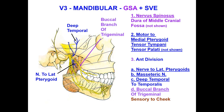The anterior division has branches: nerve to lateral pterygoid, masseteric muscle, deep temporal muscles to the temporalis, and the buccal branch of the trigeminal — which is sensory to the cheek. All these muscles are the muscles of mastication.